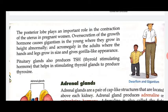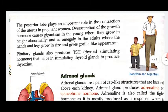Over-secretion of growth hormone also causes acromegaly in adults, where the hands and legs grow abnormally large, giving a gorilla-like appearance. The pituitary gland also produces TSH — that is, thyroid stimulating hormone.